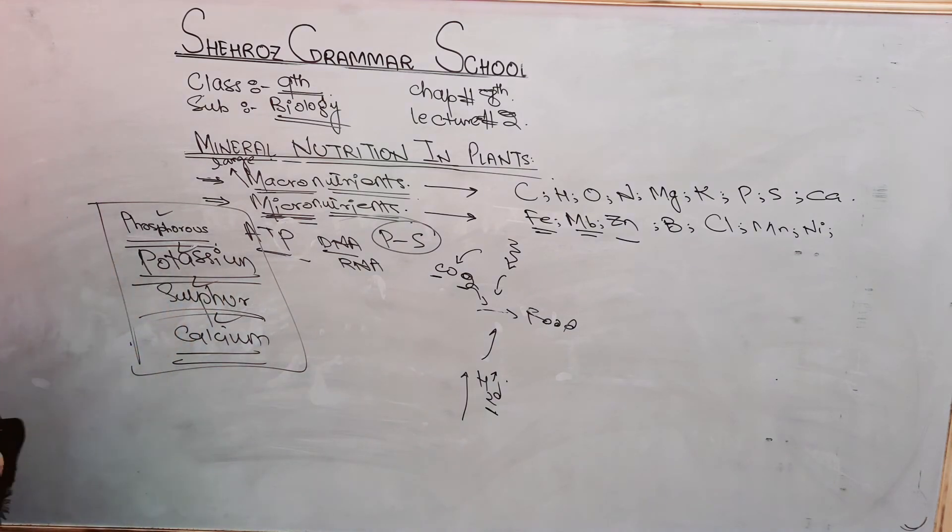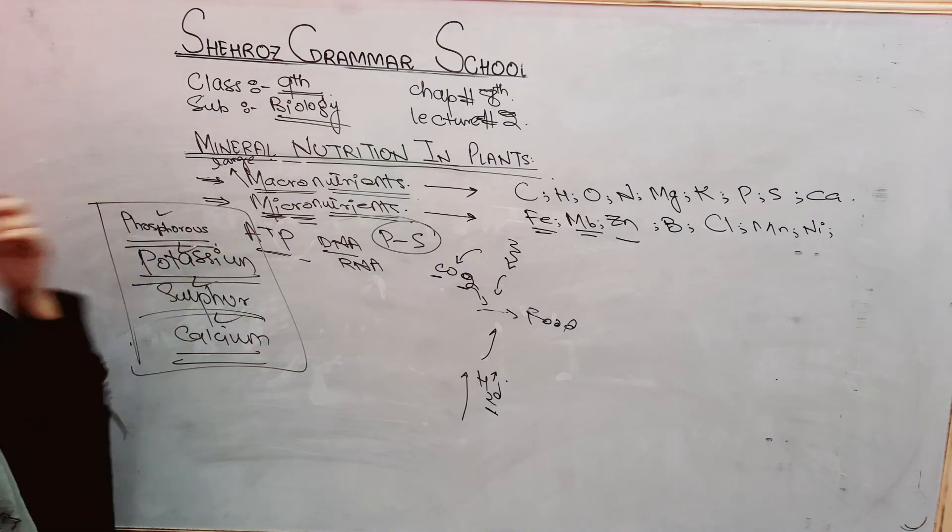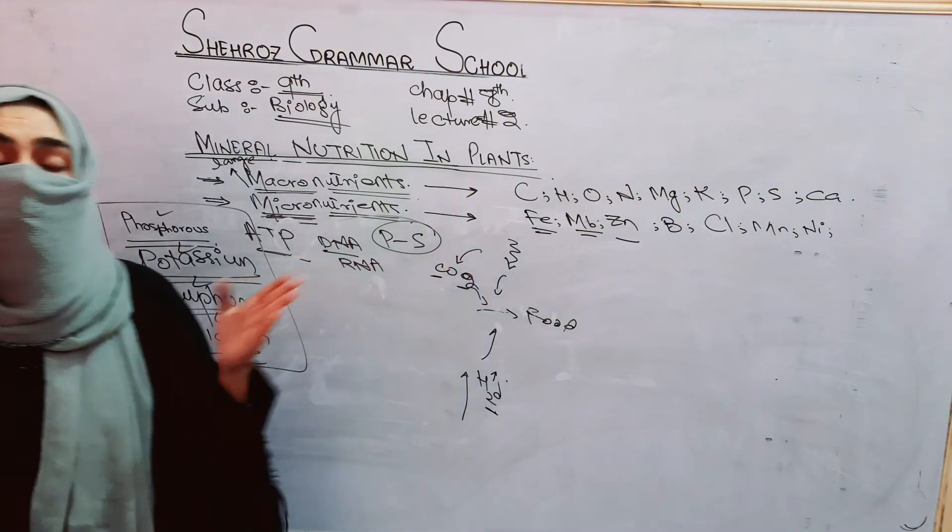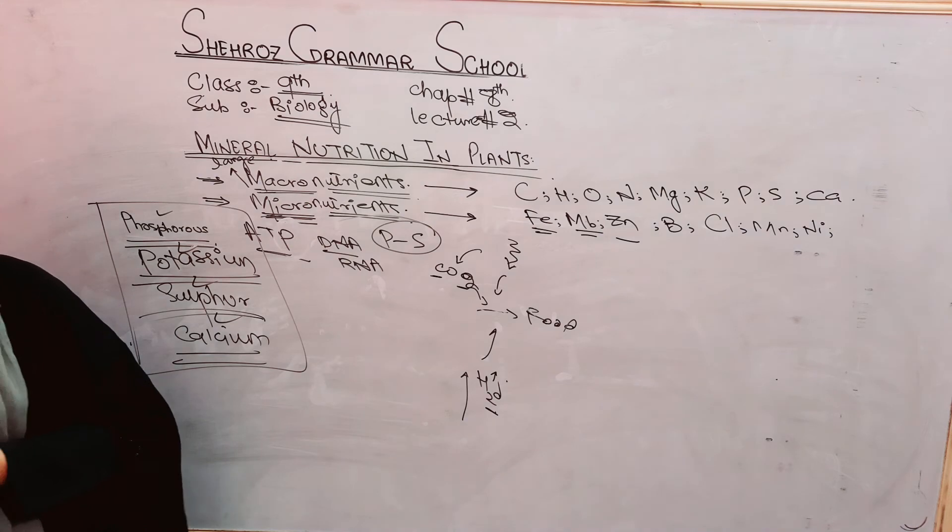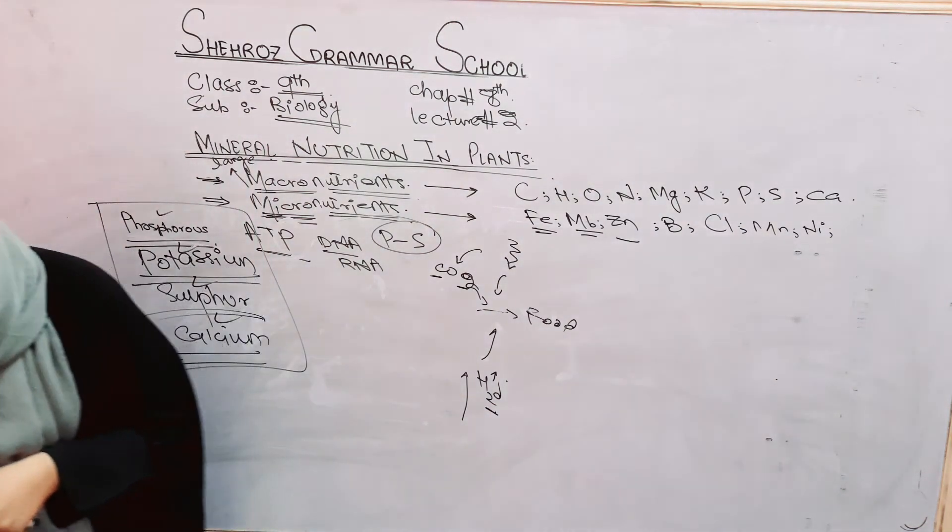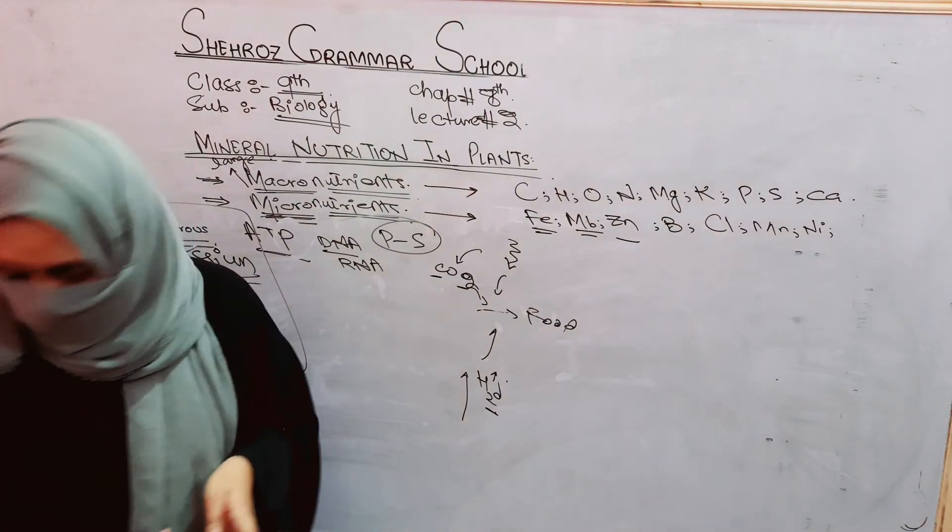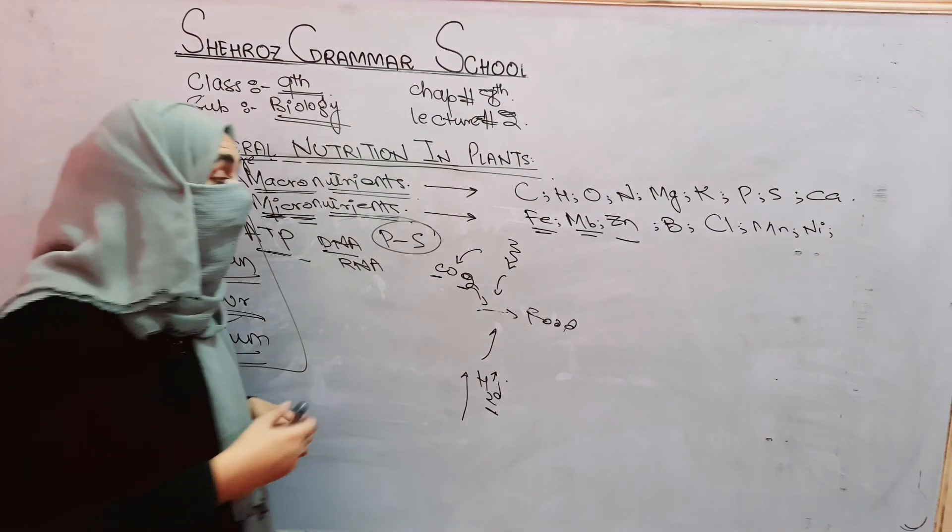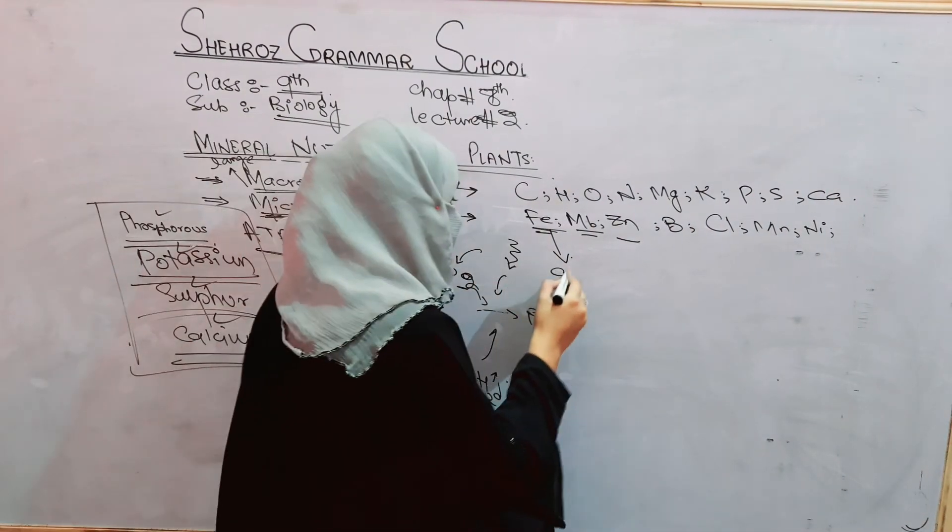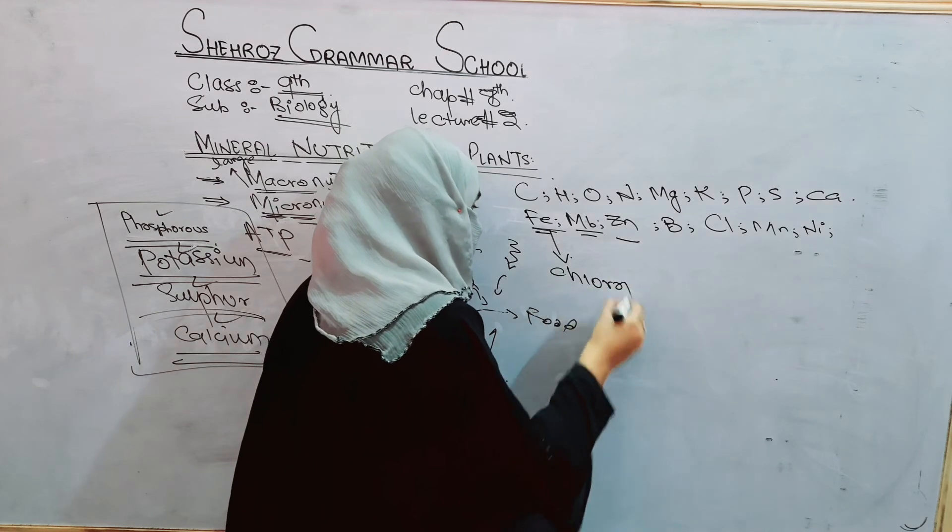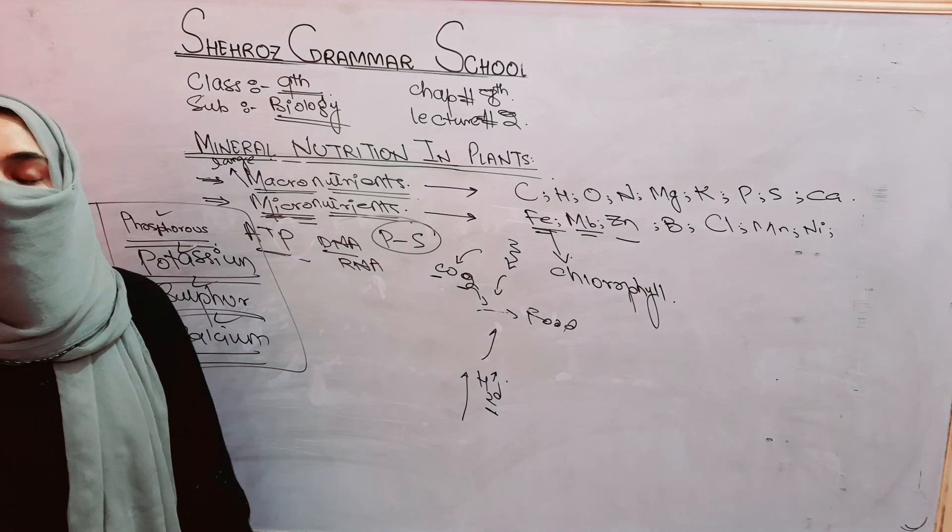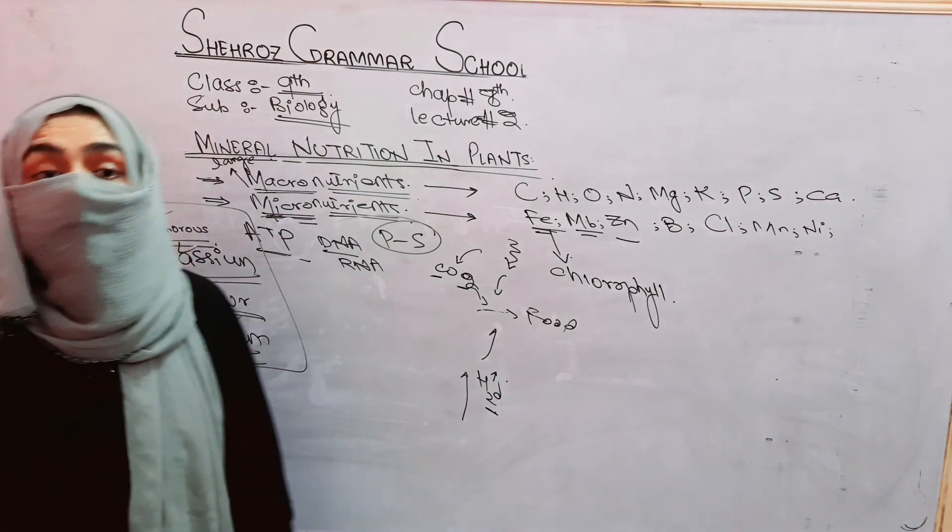Certain micronutrients such as iron, molybdenum, zinc, boron, and chlorine all have their own roles. There are some enzymes which are activated by some nutrients. Iron is needed by plants for chlorophyll formation.